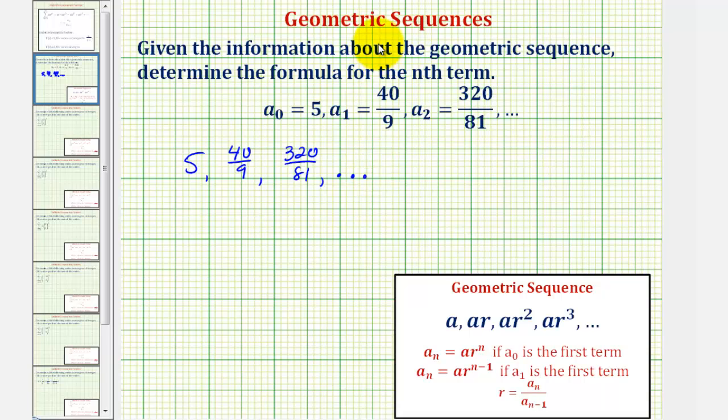All geometric sequences fit this form here, where to find successive terms, we multiply by r, which is called the common ratio.